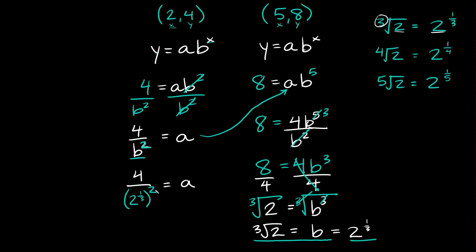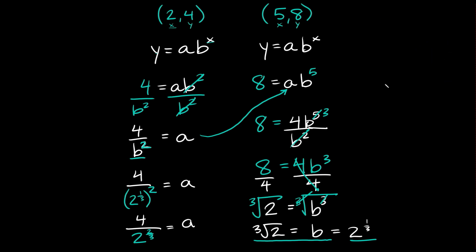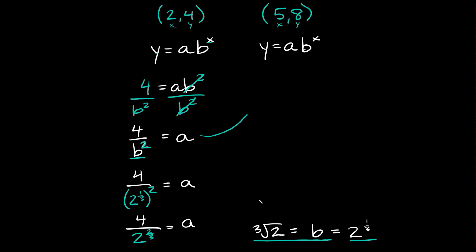Whenever you have an exponent raised to another exponent, you just multiply them together. So 1/3 times 2 is equal to 2/3. So in the denominator we really have 4 over 2 raised to the 2/3, and that equals a.